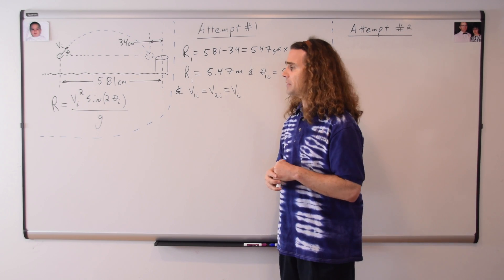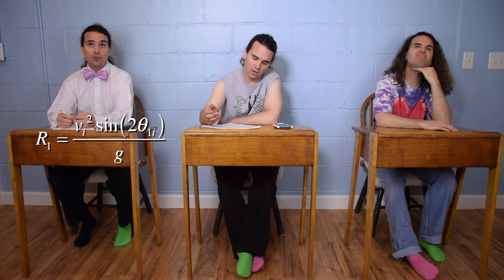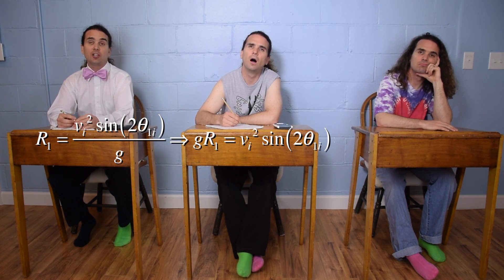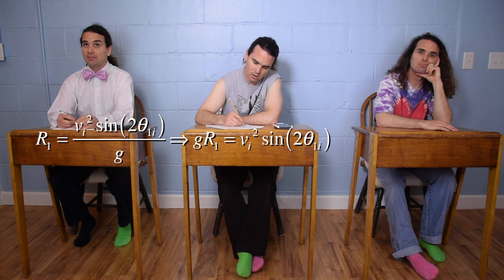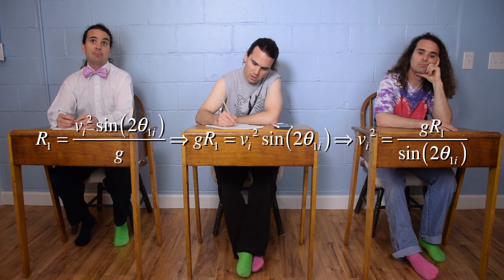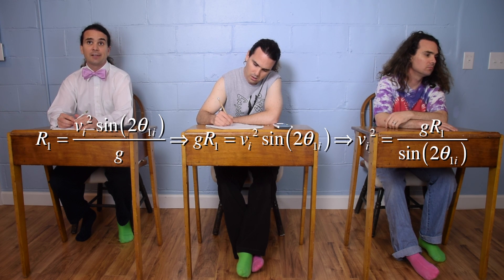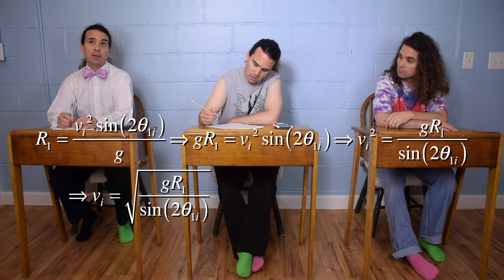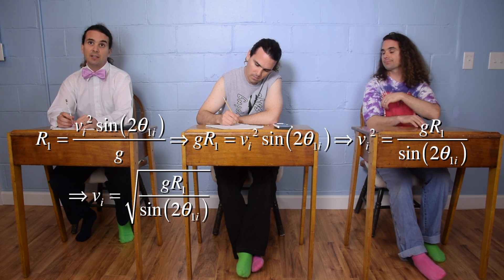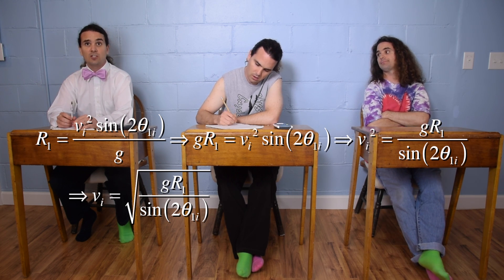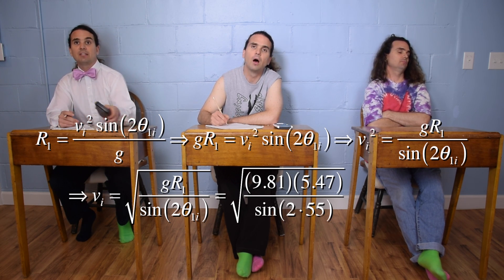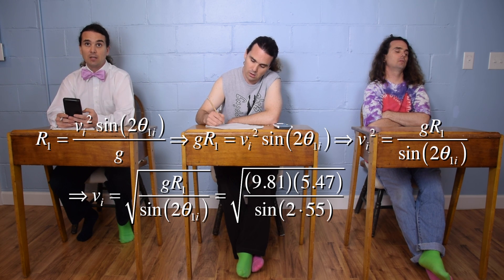Billy, could you please solve the range equation for the initial speed? Well, we can multiply both sides by the acceleration due to gravity to get little g times the first range equals the initial speed squared times the sine of 2 times the first launch angle. Then we divide both sides by the sine of 2 times the first launch angle to get the initial speed squared equals little g times the first range divided by the sine of 2 times the first launch angle. And then take the square root to get the magnitude of the initial velocity equals the square root of little g times the first range divided by the sine of 2 times the first launch angle. With numbers, that is the square root of 9.81 times 5.47 divided by the sine of 2 times 55, which is?